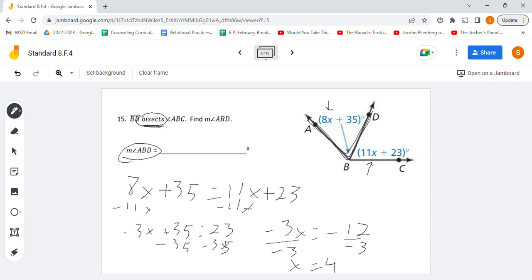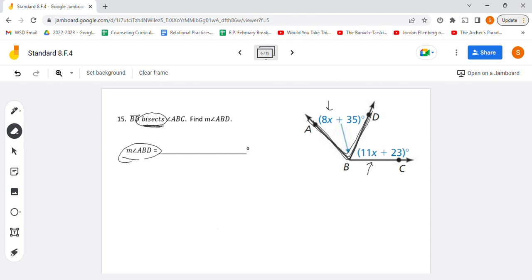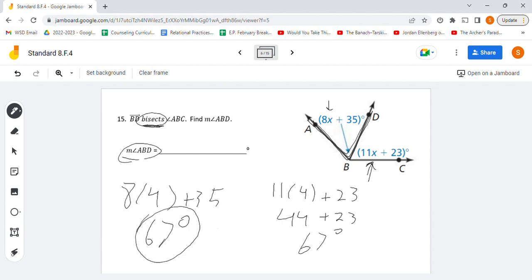So we're going to plug it into here to find out what our value is. If our X value is 4, that gives us 8 times 4 plus 35. Calculating that, we get a value of 67. Now if we're correct, then when we plug this one in here, that should also get us a value of 67, because we said they should be equal. So let's double check. We get 11 times 4 plus 23, that's 44 plus 23, which indeed gets us a value of 67. So we did our work correct. ABD then is 67 degrees, and we're finished up with this one.